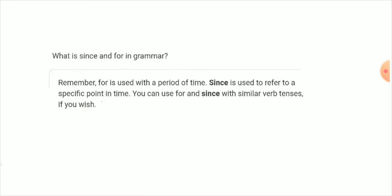What is since and for in grammar? For is used with a period of time. Since is used to refer to a specific point in time. Since is a particular time, then you have to use since. You can use for and since with similar verb tenses if you wish.